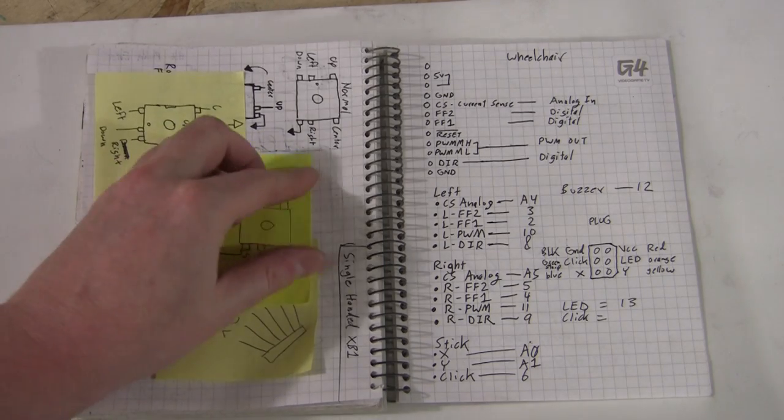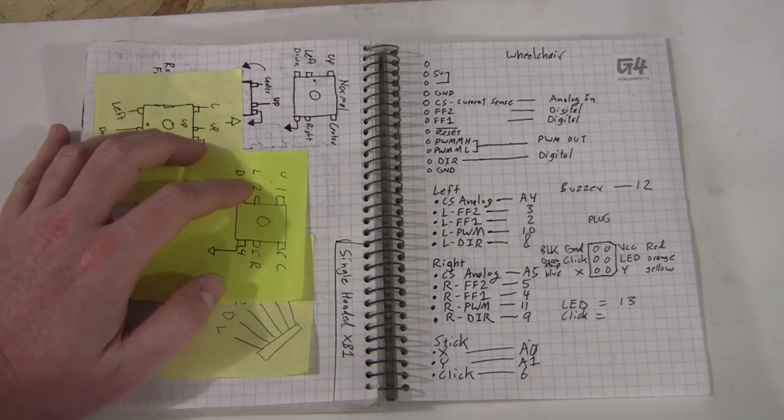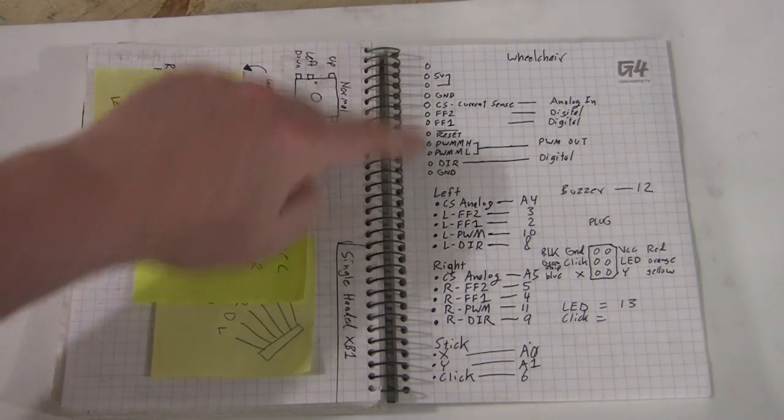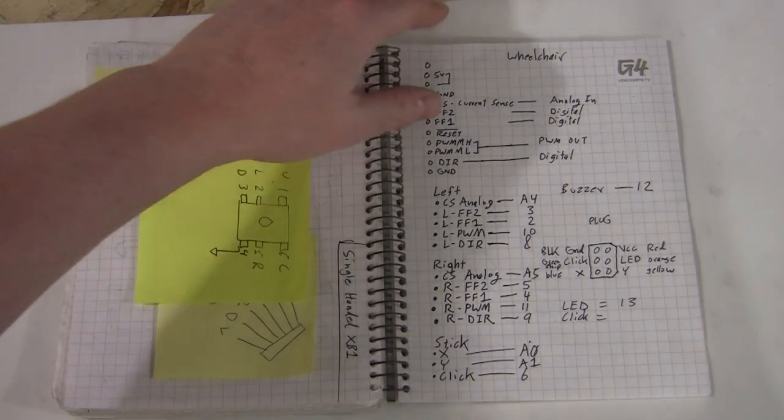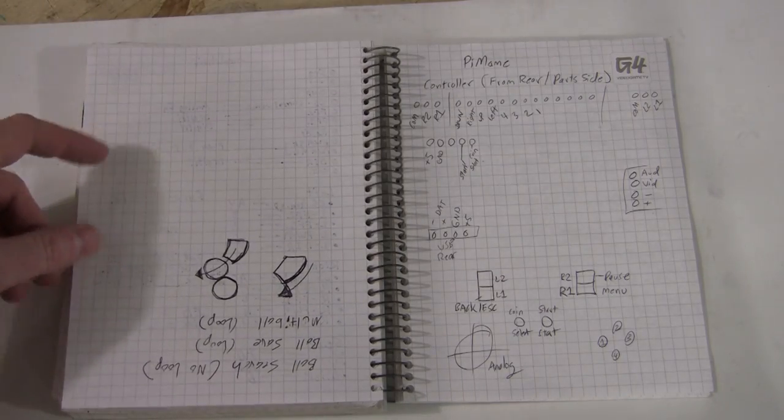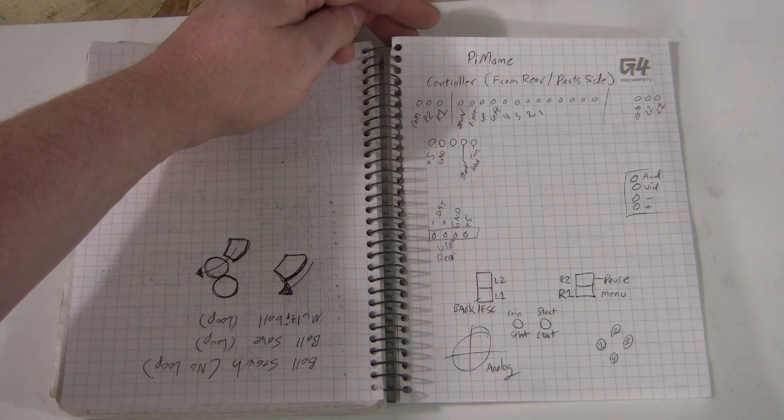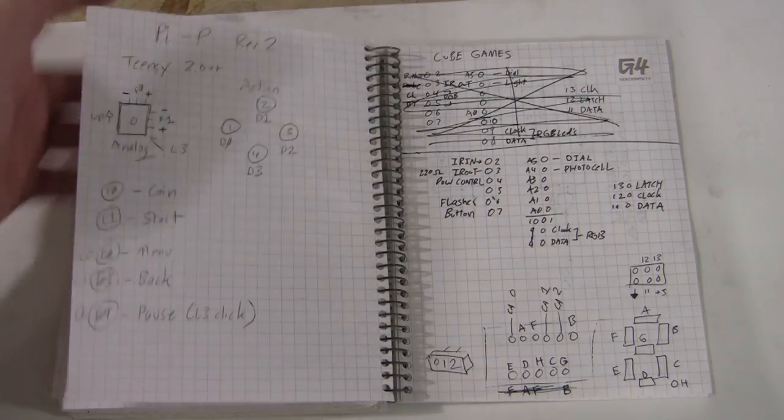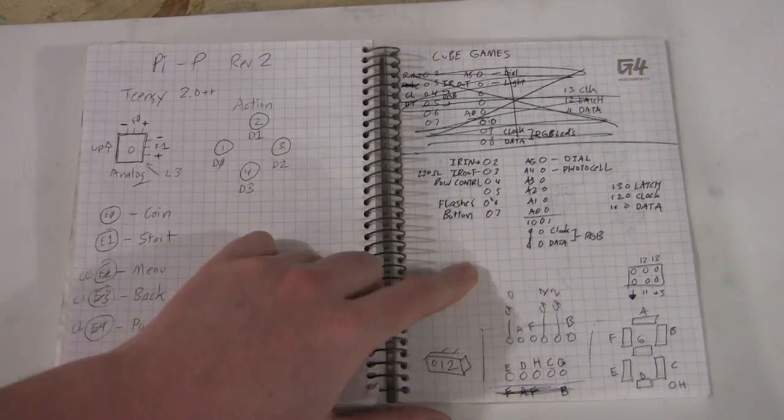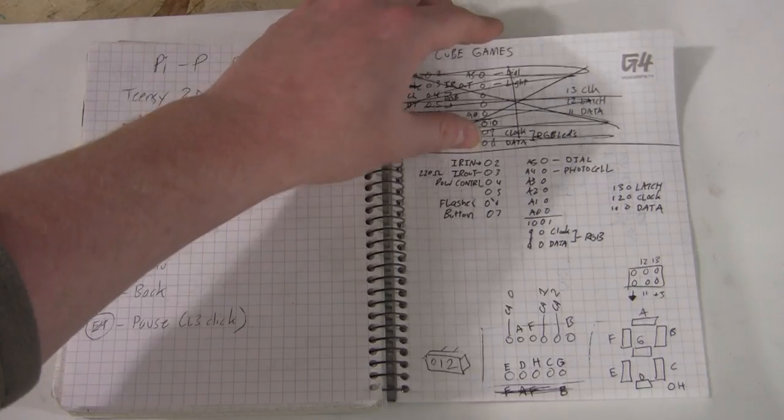Accessibility controllers. Still getting my notes together on that one. Oh, and this is the automatic wheelchair we built in 2012. Basically a pinout and what IO you're using on the microcontroller. Oh yeah, the Raspberry Pi MAME portable. Cube Games. That was also a project from 2013 that we did for Ben Sawyer.